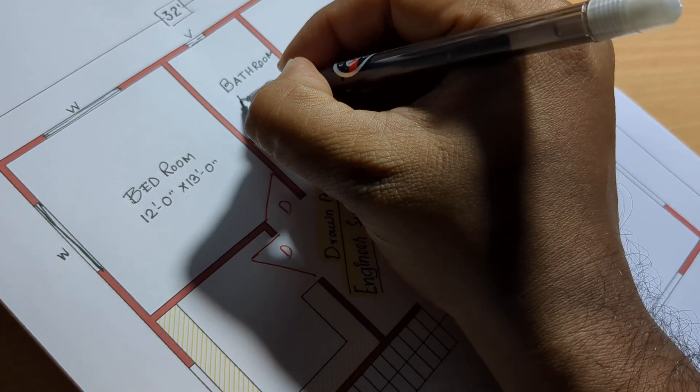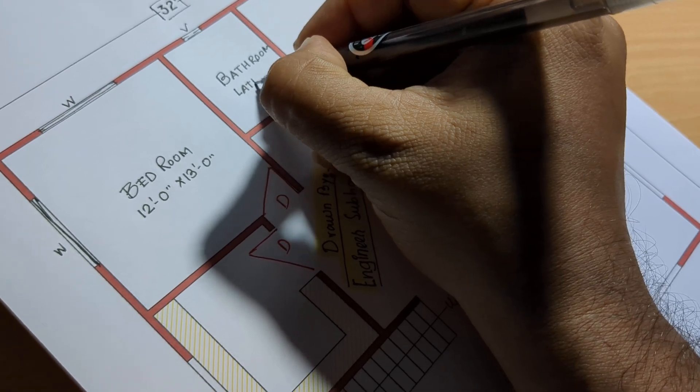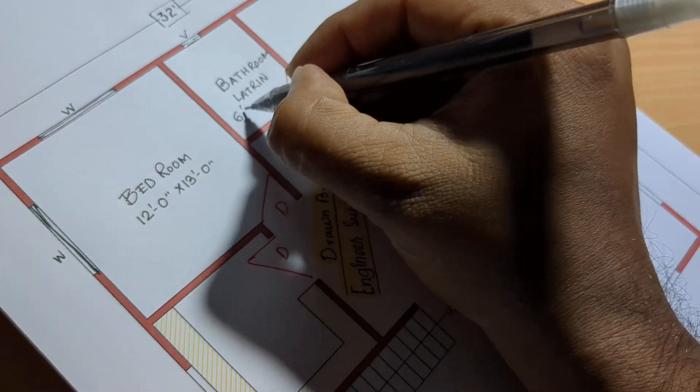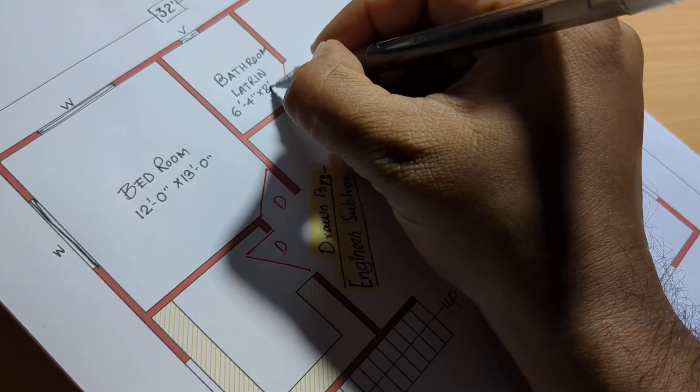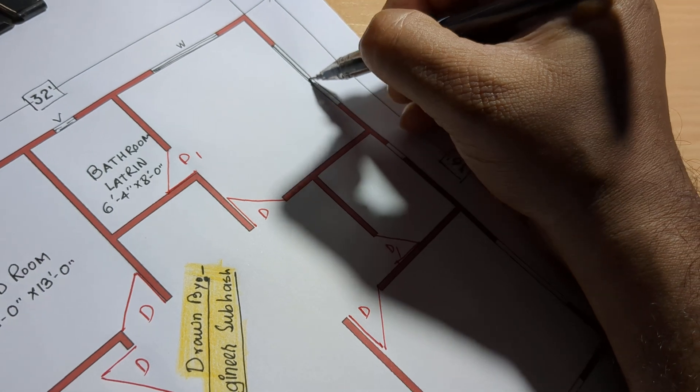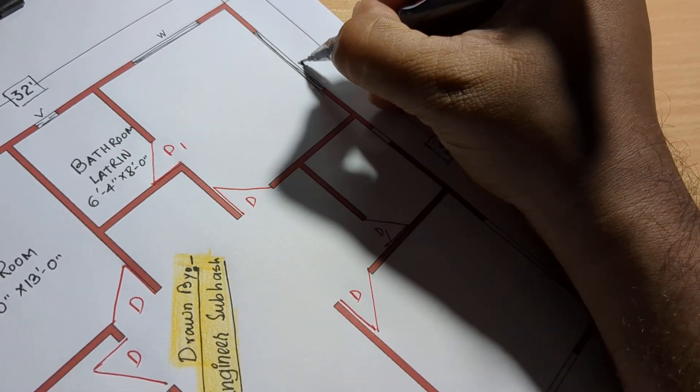Bathroom on the left: 6 feet 4 inch by 8 feet 0 inch, with window.